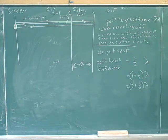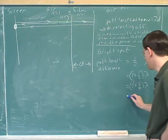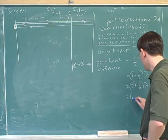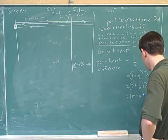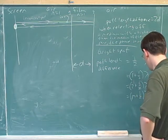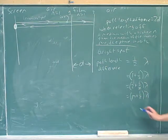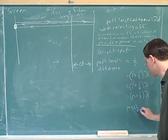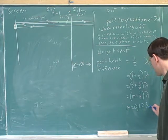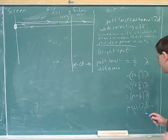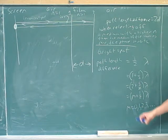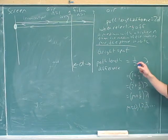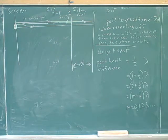Or two and a half wavelengths. The mathematicians would say we need a path length difference of m plus one half, where m is any integer. This is our index. You have to ask whether m could be zero — and yes, m could totally be zero here. That's just the original case where there's just a half wavelength difference. So this is our basic formula.